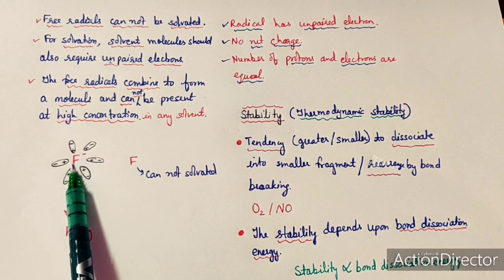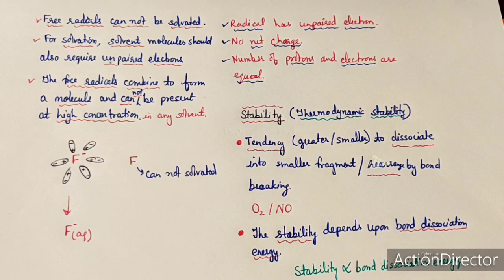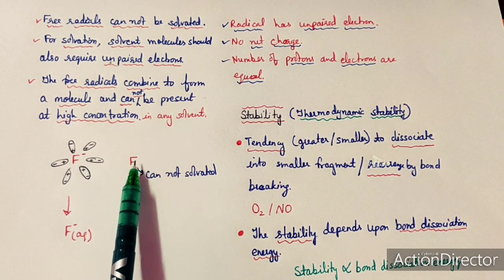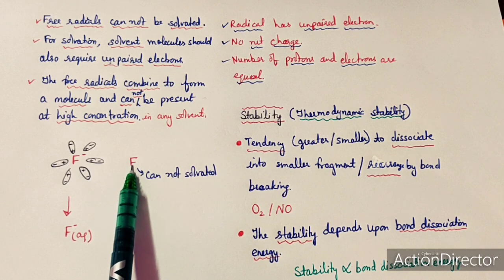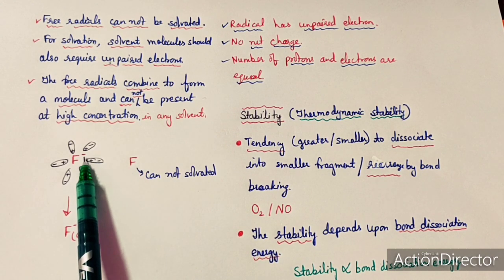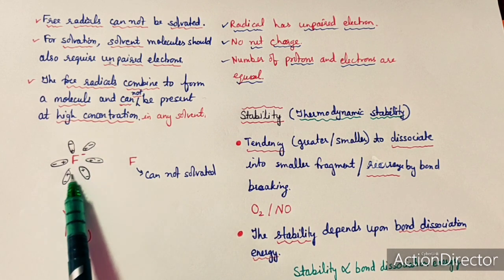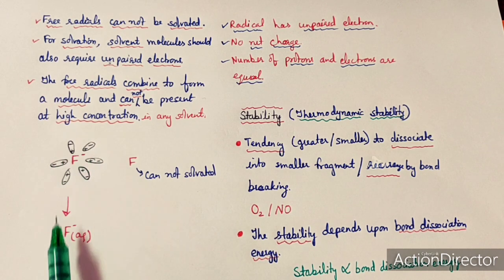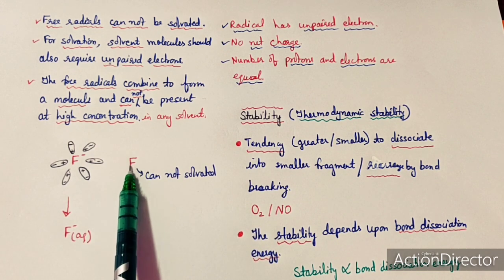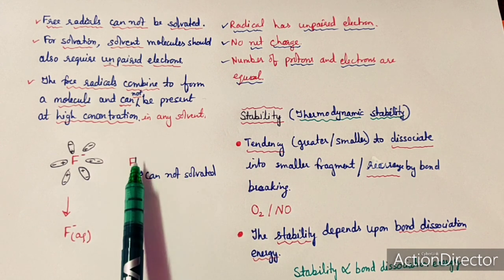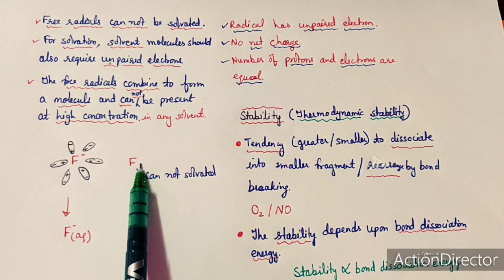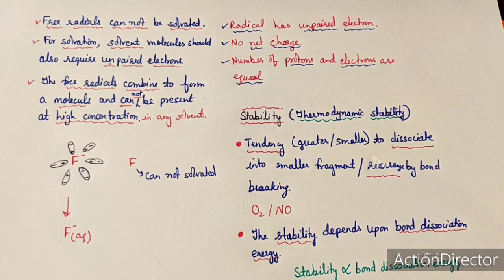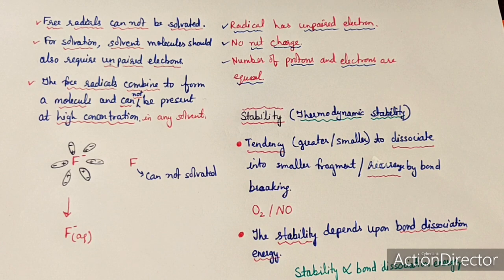To illustrate: the fluoride ion has 10 electrons but only 9 protons, so it carries a negative charge and is an ion that becomes hydrated when dissolved in water, with the positive pole of water molecules directed toward it. Fluorine atom, however, has 9 protons and 9 electrons — no charge — and cannot exist freely in water because one fluorine will immediately react with another to form F₂. This is the key difference between an ion and a free radical.